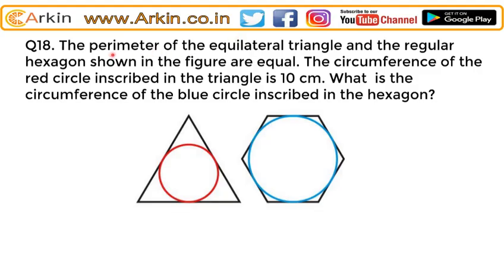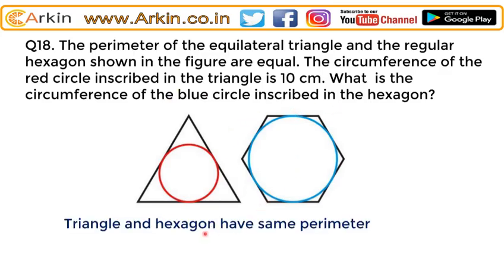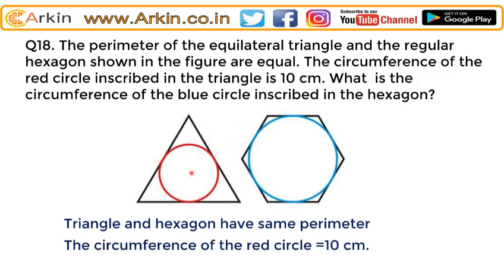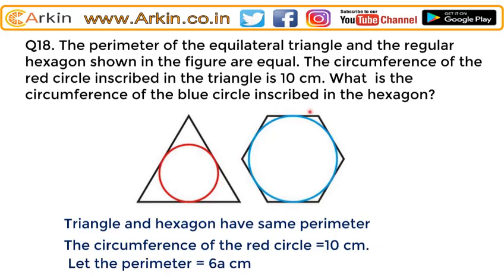The perimeter of an equilateral triangle and a regular hexagon are given as equal. The circumference of the red circle inscribed in the triangle is given as 10 centimeters, and the question is: what is the circumference of the blue circle inscribed in the hexagon? Let's assume the perimeter of the triangle, which equals the perimeter of the hexagon, is 6a centimeters.